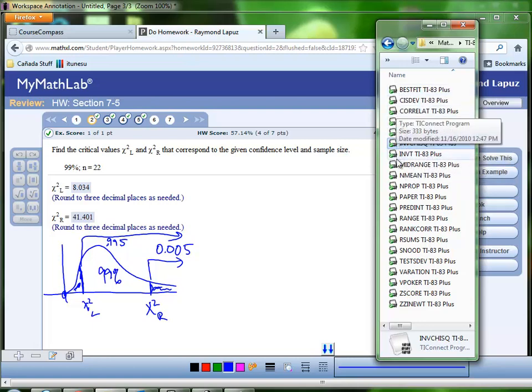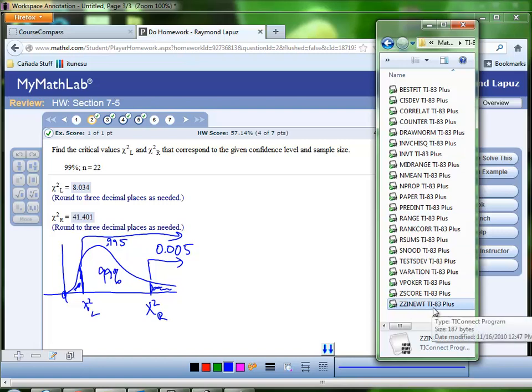The best thing to do is to make sure that you have all these programs installed because this particular program actually relies on ZZI Newt. And so if you don't have that installed, you're going to get an error message. You can pick and choose a handful of these programs to put on your calculator, but it's better to really just dump everything onto your calculator.